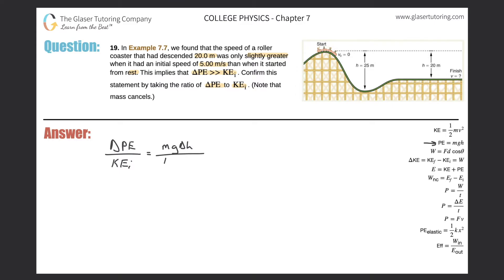Alright, so that should be pretty straightforward. This is one half times the mass times the initial velocity squared. Now this is basically what they're telling us. Notice the mass cancels, so that's great.